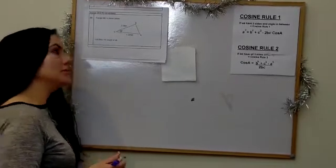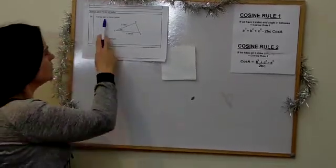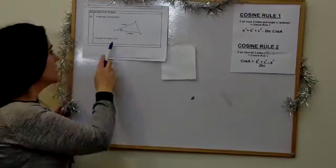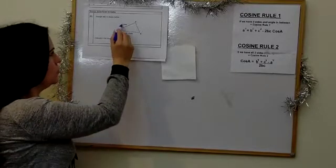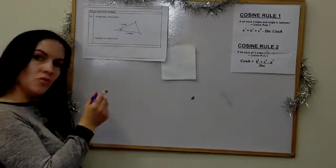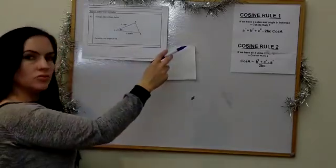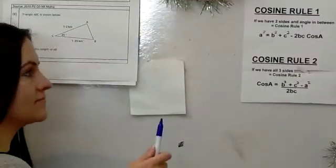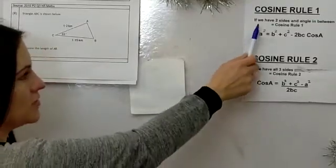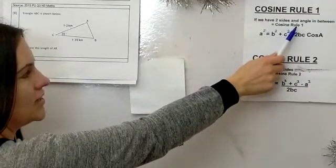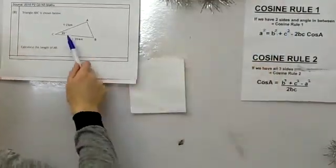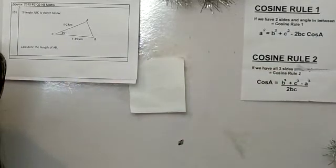Our third example shows triangle ABC and we're asked to find the length of AB. We have two sides and the included angle, so looking at our rules, this is cosine rule 1 again. We write out the cosine rule 1 formula.